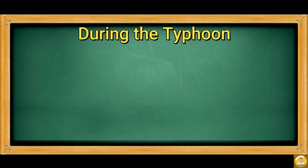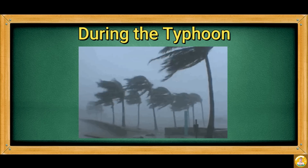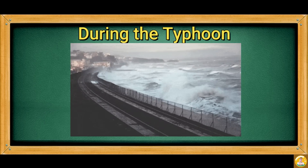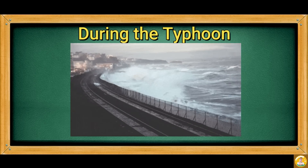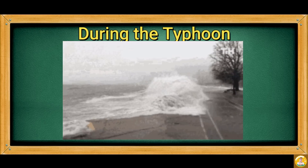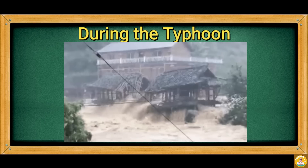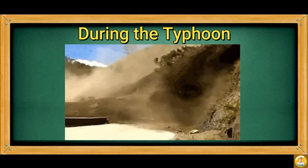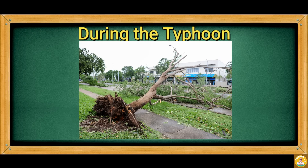During a typhoon, the sky is dark and cloudy. Heavy rainfall accompanied by strong winds occurs. Big waves are also observed near the coast. When these waves become unusually high due to abnormally high ocean tides, a storm surge occurs. Flash floods may also occur due to heavy rainfall. Landslides may be triggered by flash floods and heavy rains. Some trees and crops may be uprooted by strong winds.